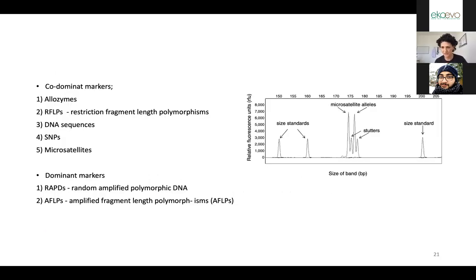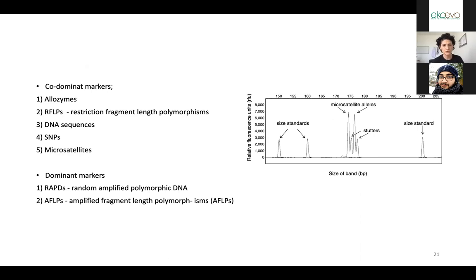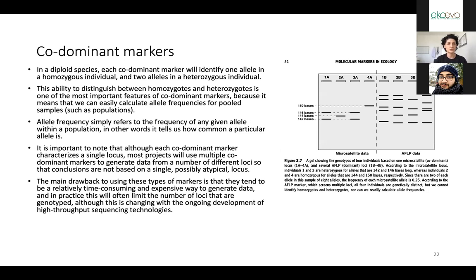Codominant markers include: allozymes — one of the most ancient; RFLP (restriction fragment length polymorphism) — also one of the older ones now combined with sequencing technology; DNA sequencing; single nucleotide polymorphism (SNPs); and microsatellites. The last three are the most commonly used today in molecular ecology. I'll also give brief information about dominant markers: RAPD (randomly amplified polymorphic DNA) and AFLP (amplified fragment length polymorphism).